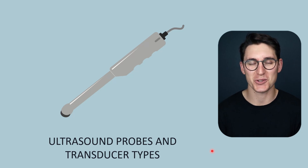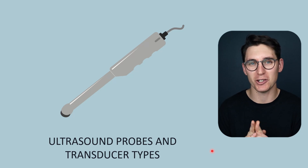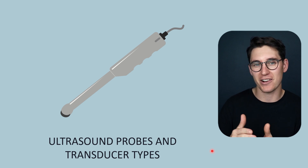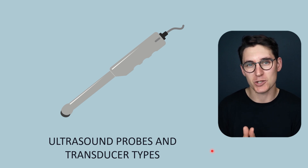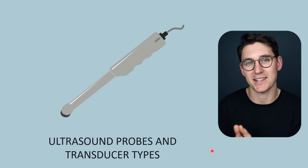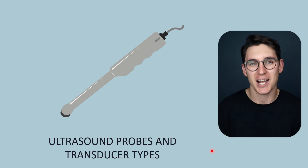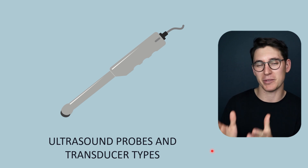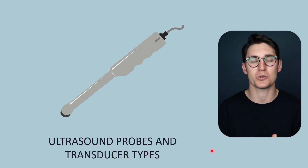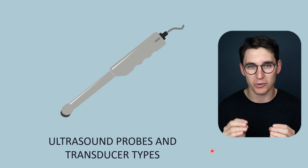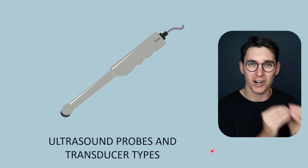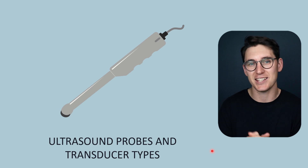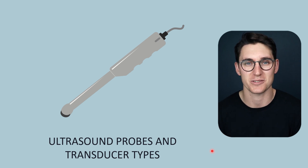Hello and welcome back. In the next few talks we're going to be looking specifically at the ultrasound beam. We'll describe the various different properties of the beam as well as looking at how we can manipulate that beam in order to generate the type of image we're trying to acquire. Today I'm going to start off by looking at various ultrasound probes, the most commonly used ultrasound probes, and the different types of transducers.